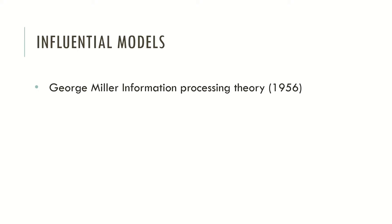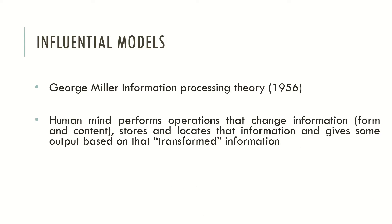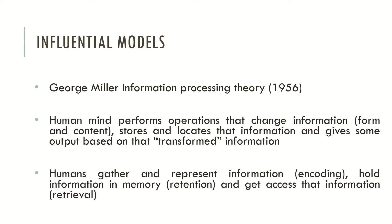Now let's look at some influential models that shaped cognitive psychology. George Miller's information processing theory states that the human mind performs operations that change information's form and content, stores and locates that information, and gives output based on that transformed information. This means humans gather and represent information — the encoding process — hold information in memory, which is the retention process, and then access that information, which is the retrieval process.